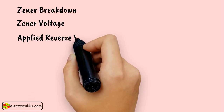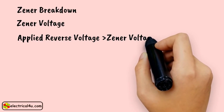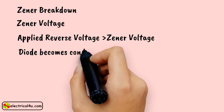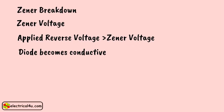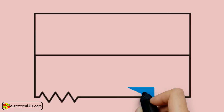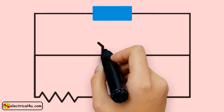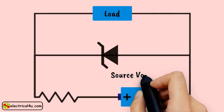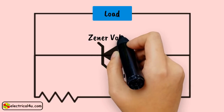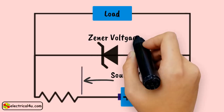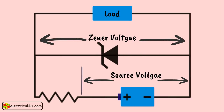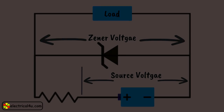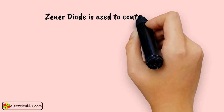The voltage at which this breakdown occurs is called Zener voltage. If the applied reverse voltage across a diode is more than the Zener voltage, the diode provides a conductive path to the current through it. Hence there is no chance of further avalanche breakdown. When a Zener diode is connected across a voltage source and the source voltage is more than the Zener voltage, the voltage across the Zener diode remains fixed irrespective of the source voltage. The current through the diode can be of any value depending on the load connected with the diode. That is why Zener diode is mainly used for controlling voltage in different circuits.